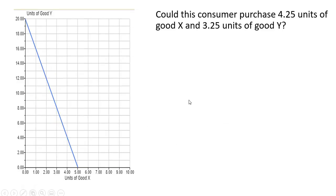Our last problem: could this consumer purchase 4.25 units of good X and 3.25 units of good Y? We can calculate the equation for this line. In general form, Y = a + bX.